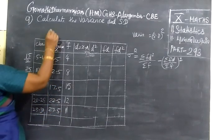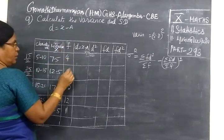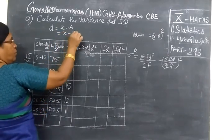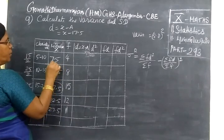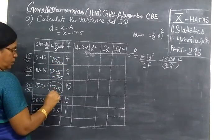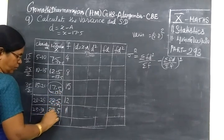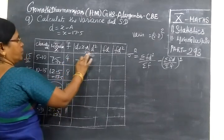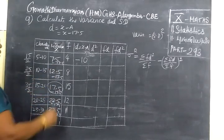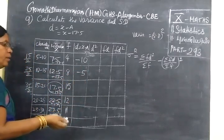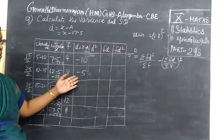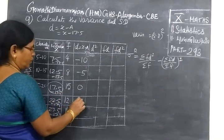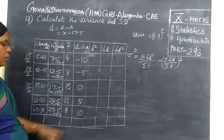Now we take D equals x minus A. A is the middle value, so you can write x minus 17.5. Now subtract 17.5 from each term. You get minus 10, minus 5, 0, then 5. You can see this equals C times values.